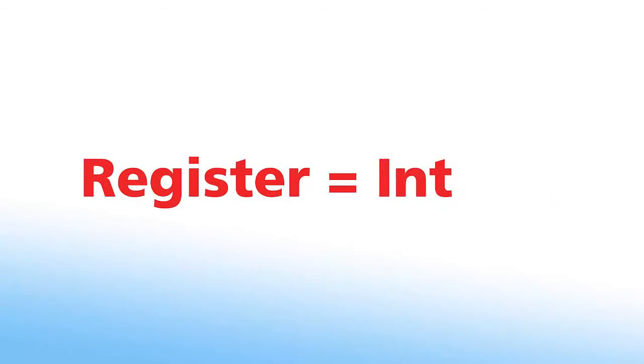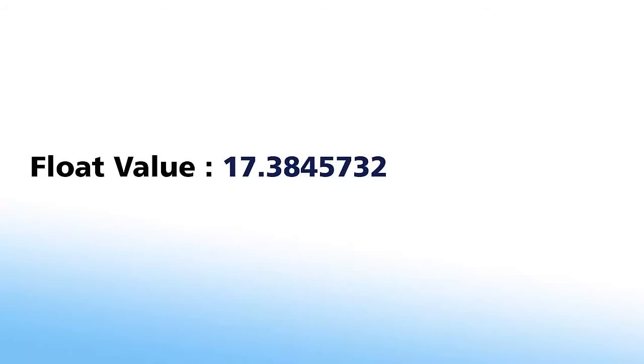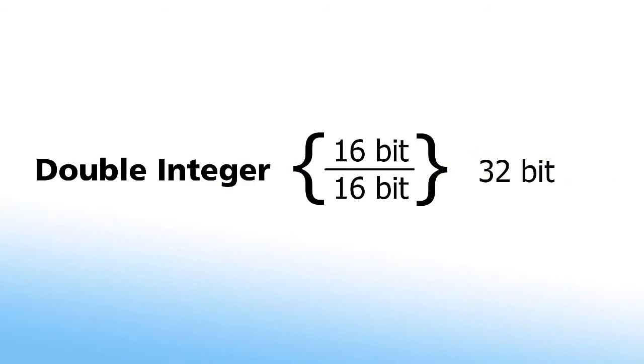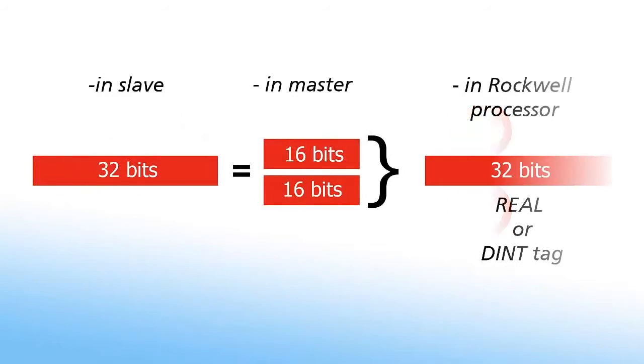There are no registers for floats or double integers, although they can be sent by dividing them into two registers. Float values are any real number with a decimal point that is represented by a 32-bit register. Double integers, or dints, are simply two 16-bit values stacked together, also represented by 32 bits. This presents a small problem since Modbus does not have a float or dint data type. The solution, obviously enough, is that the 32-bit value is broken into two separate 16-bit registers and then recombined into a 32-bit real value. This is accomplished by copying the two 16-bit registers to one real tag in the Rockwell processor.